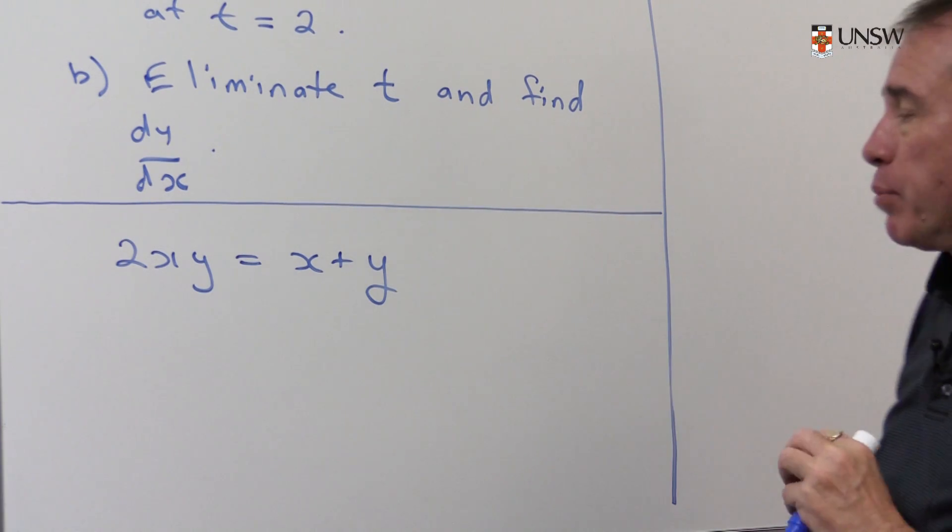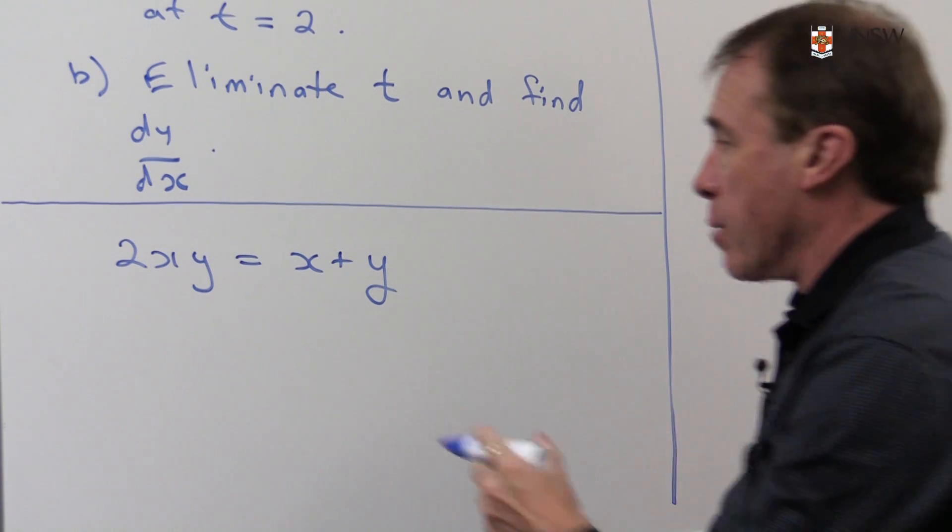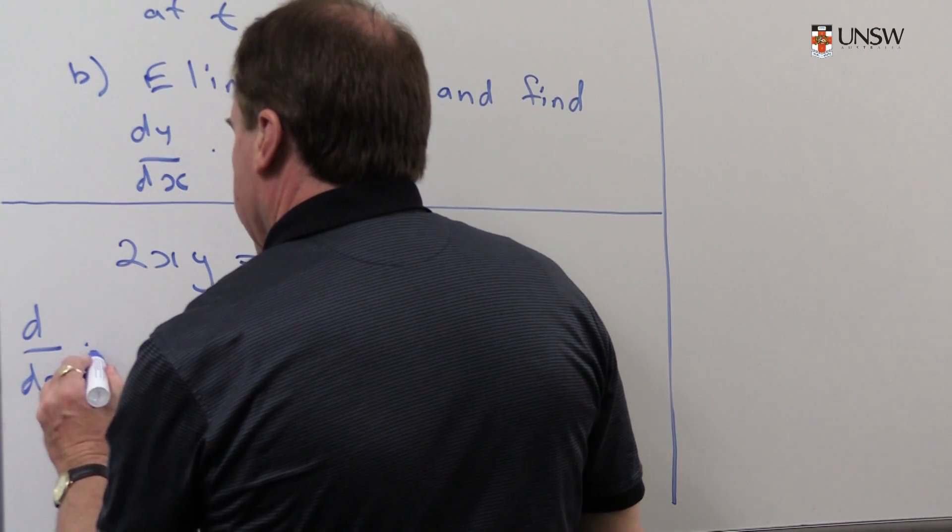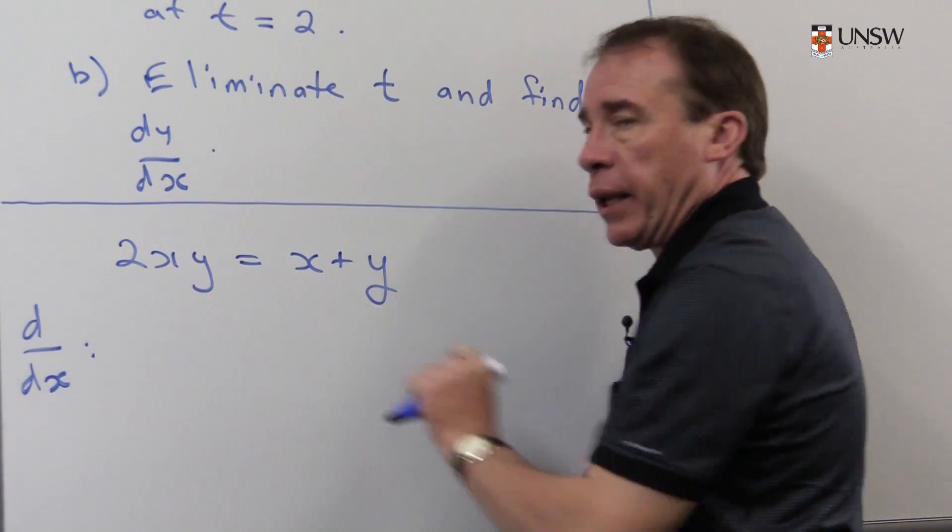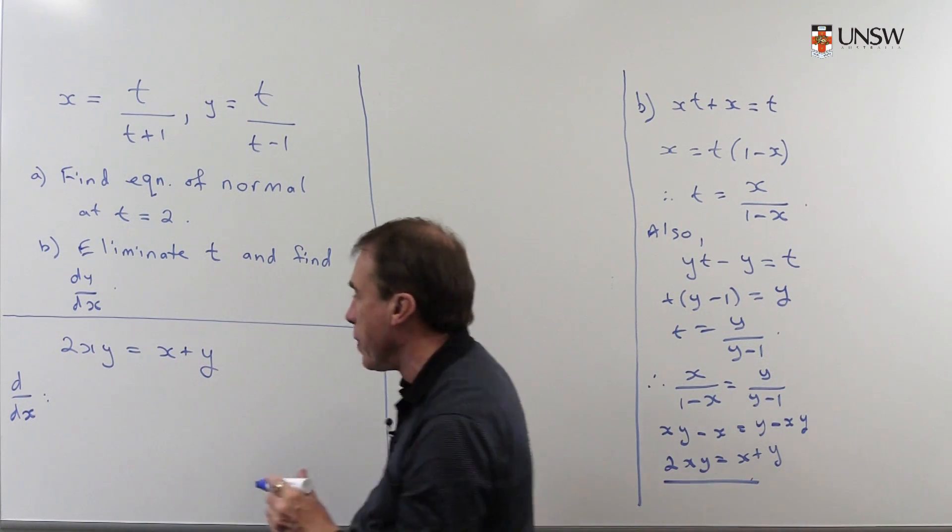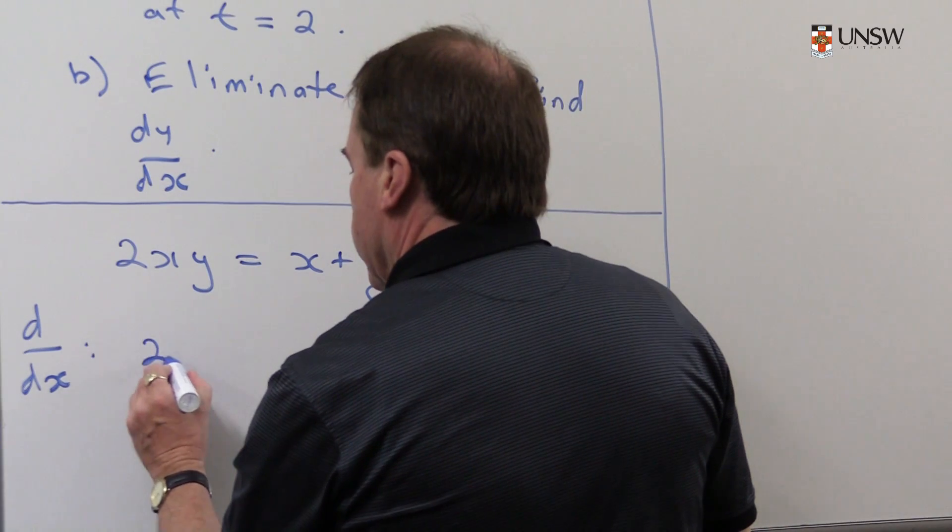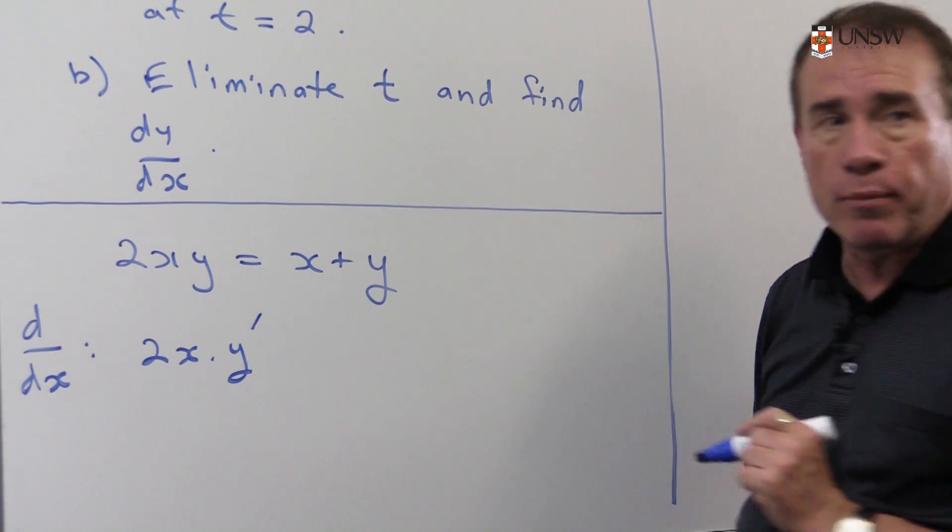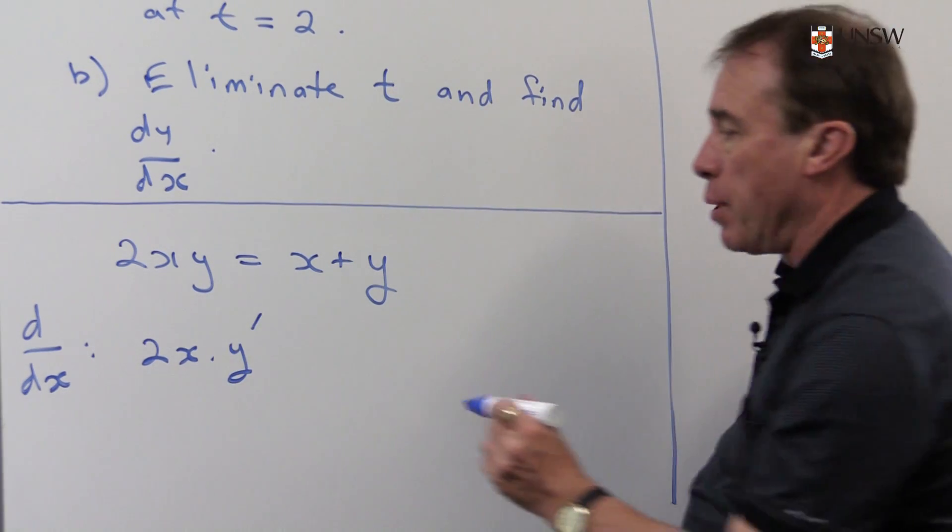So I'm going to differentiate both sides with respect to x. So differentiate the left side with respect to x. Well, I'm going to need the product rule. So I copy the first and differentiate the second. So I'll write that symbolically as y'. Plus, differentiate the first, I get 2.